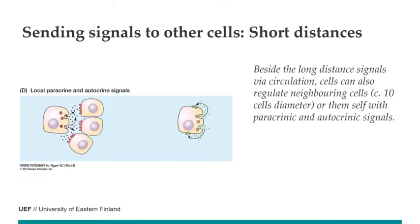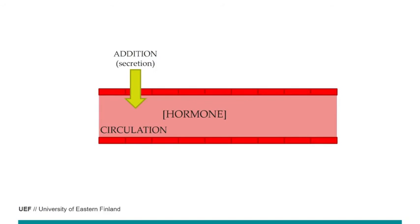Then we have short-distance signals — paracrine and autocrine signals — sending messages to nearby cells, maybe up to a distance of 10 cells, but microscopic and not in the circulation. A signal can even regulate the same cell that released it, by having receptors in that same cell. To simplify: endocrine cells release hormones into the circulation, adding to the hormone level there.